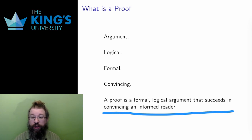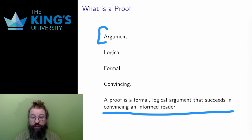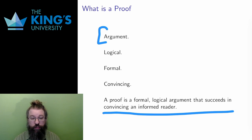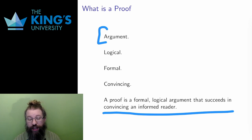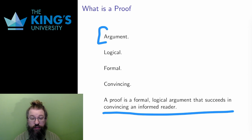Let me talk through this definition. First, a proof is an argument. It is persuasive — it has a proposition, and it wants to convince its reader that the proposition is true. In this, it shares something with all the other persuasive writing throughout the university, including scientific studies, aesthetic critiques, and persuasive essays.